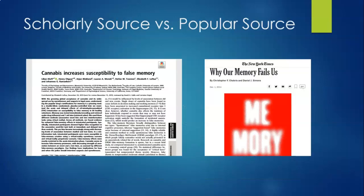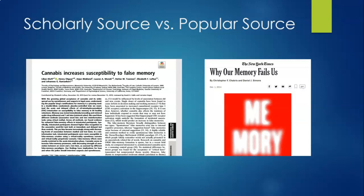Remember that scholarly and popular sources are geared toward different audiences. Just by looking at these two articles, you can see how they target different audiences. Here, you have lots of authors, and down here it lists all of their institutional or academic affiliations. Whereas over here, you have a popular article, also about memory, and you can just see these two authors listed right here. You have to scroll all the way down to the bottom of the article or maybe Google them in order to figure out who those authors are.